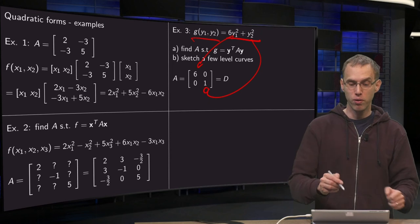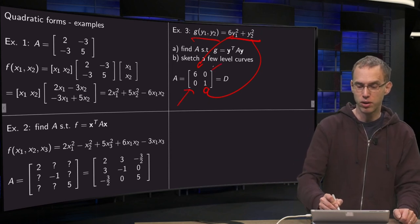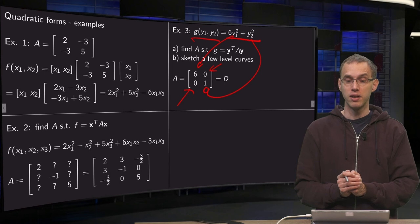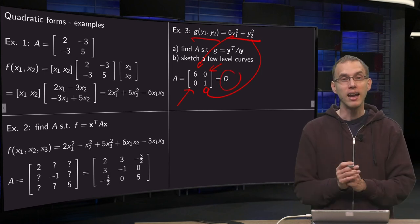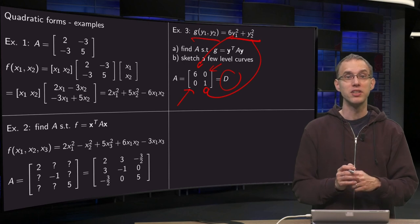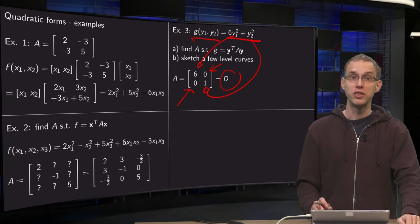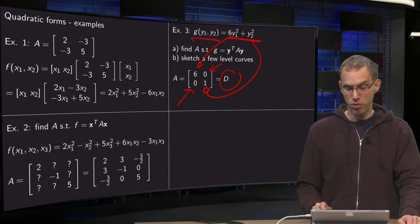We have no off-diagonal, no mixed terms, so no off-diagonal terms. So our matrix A becomes in fact a diagonal matrix. And now if you have a diagonal matrix for our quadratic form the sketching also becomes doable often.